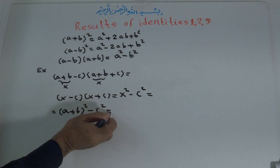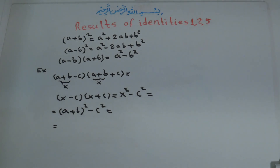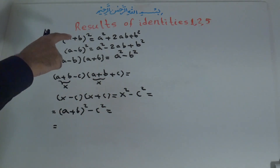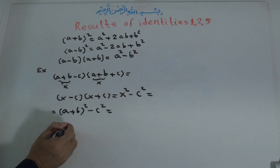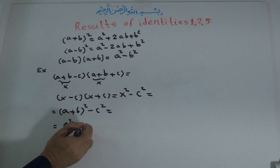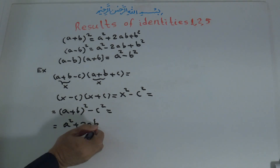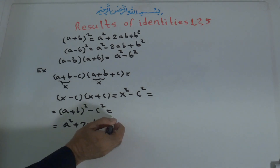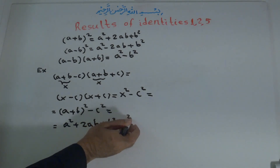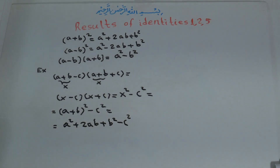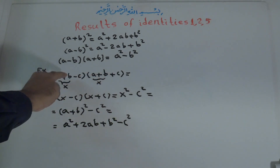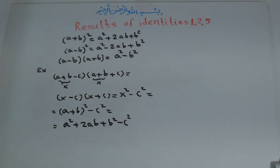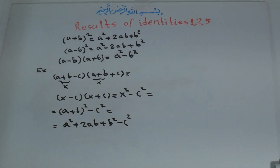This is equal to, now we simplify: x squared minus c squared becomes a plus b to the power of two minus c to the power of two. According to identity number one, a plus b to the power of two is a to the power of two plus two ab plus b to the power of two, minus c to the power of two. If we had multiplied the two original brackets directly, it would take a lot of time, space, and there's a chance of mistakes — but using identities makes it simple.